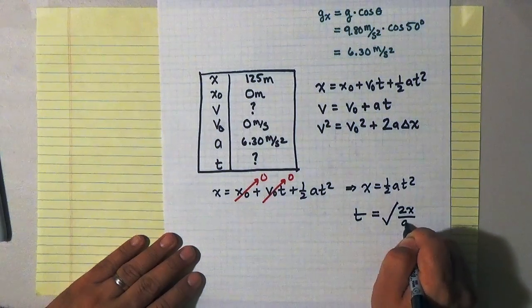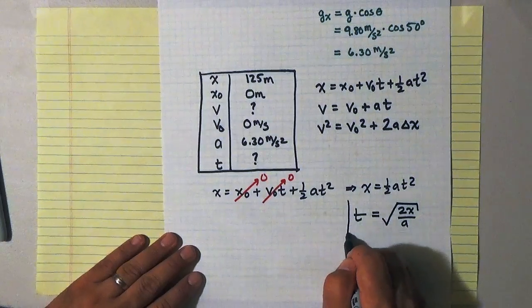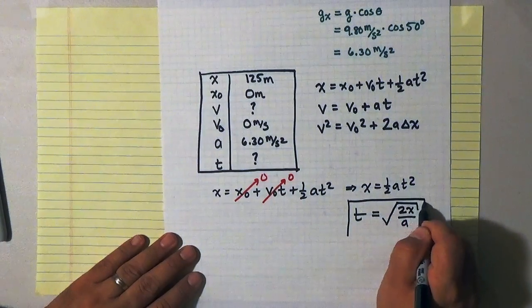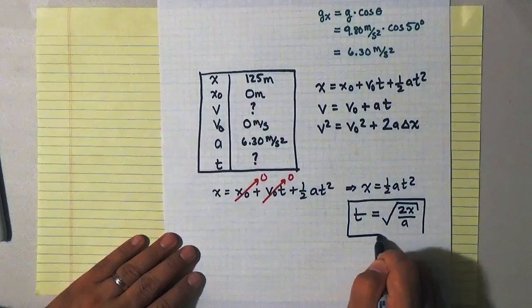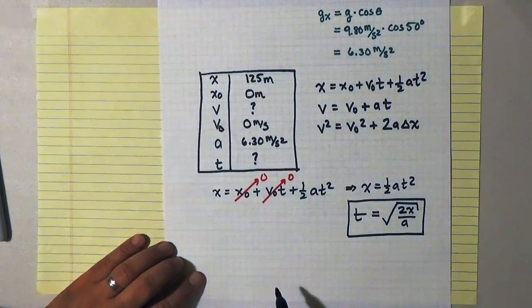Or t is equal to the square root of 2x over a. So that is the amount of time that it takes me to slide from the top of the slope to the bottom of the slope.